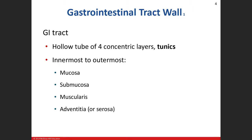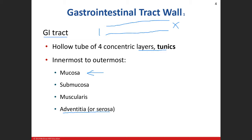In lab we discussed the GI tract as our hollow tube — from start to finish. In this tube we have four layers or tunics. The innermost layer is the mucosa, and the outermost is the adventitia or serosa depending on location. Structures within a serous membrane have an outer layer called the serosa — like the peritoneum in the abdomen. If outside, we call it the adventitia. These four layers are consistent throughout the entire length of the digestive system.